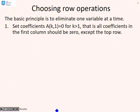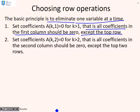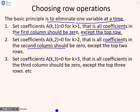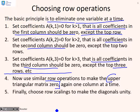Choosing row operations is the same as for simultaneous equations — the basic principle is to eliminate one variable at a time. First, we choose row operations so that all coefficients in the first column are zero except for the top row. Then we look at the second column and set all coefficients to zero except the top two rows. Then the third column, zeroing all except the top three rows. Having done that for all columns, we then apply row operations to make the upper-triangular part zero, again one column at a time. Finally, once the matrix is diagonal, we choose row scalings to make the diagonals unity.